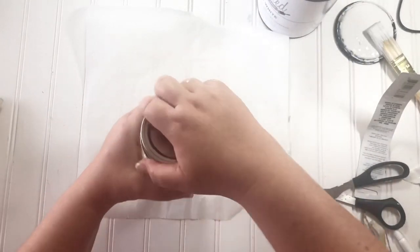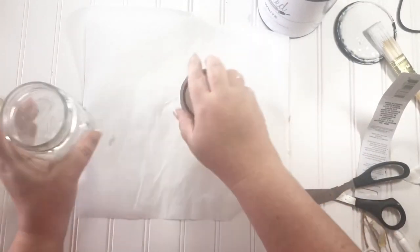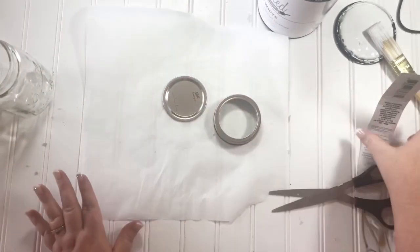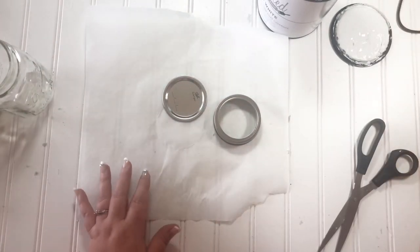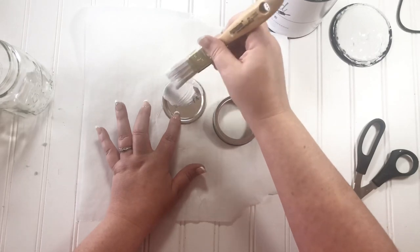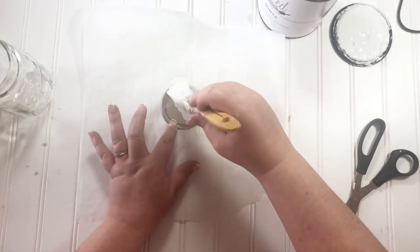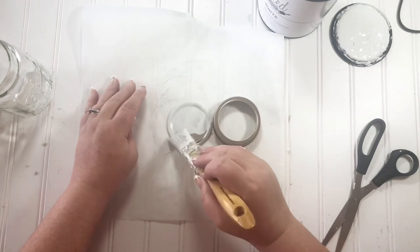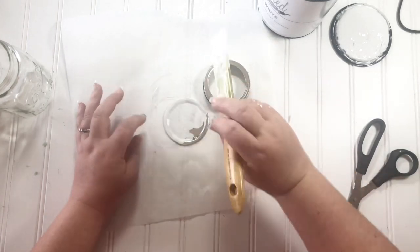Next I thought it would be really cute to use a mason jar to put some flower seeds in. And so again, just like the last one, I painted both pieces of the mason jar lid with the white Rust-Oleum chalk paint.